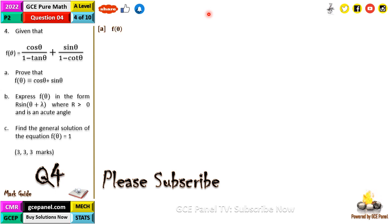So here in part A we have f(θ) equals cosθ over 1 minus tanθ plus sinθ all that over 1 minus cosθ. This should be equal to cosθ all that over 1 minus sinθ over cosθ plus sinθ all that over 1 minus cosθ over sinθ. So here we multiply each of these expressions by its denominator.